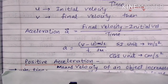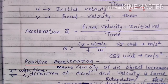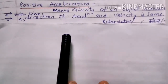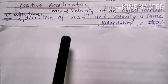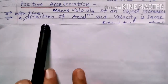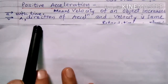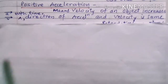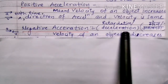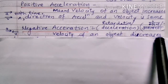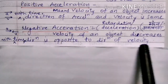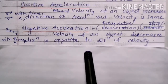Positive acceleration means the velocity of an object increases with time, and the direction of acceleration and velocity is the same. Negative acceleration means the velocity of an object decreases with time, and the direction of acceleration is opposite to the direction of velocity.